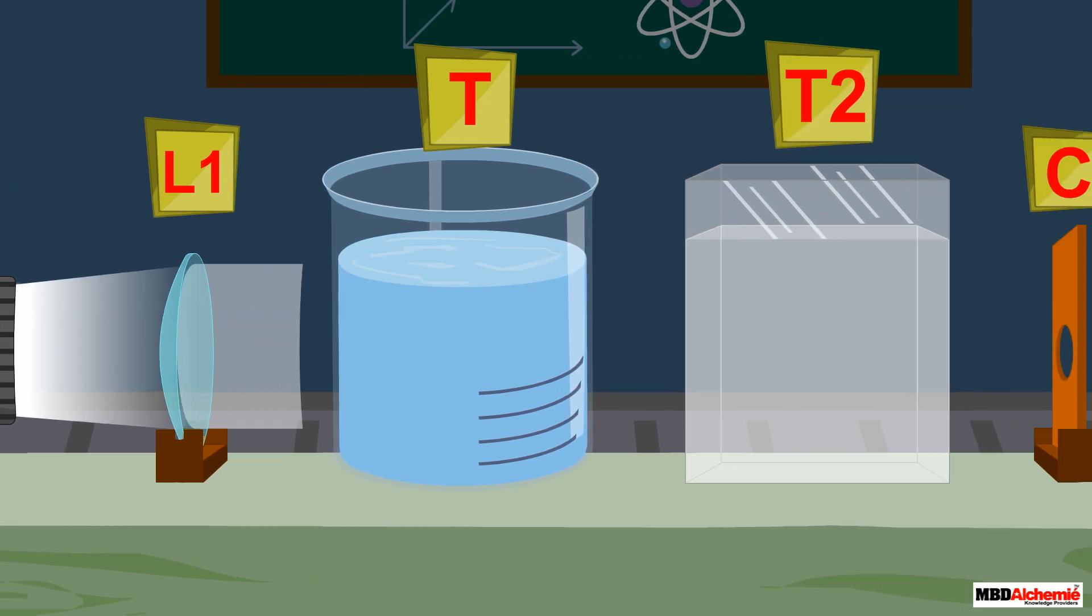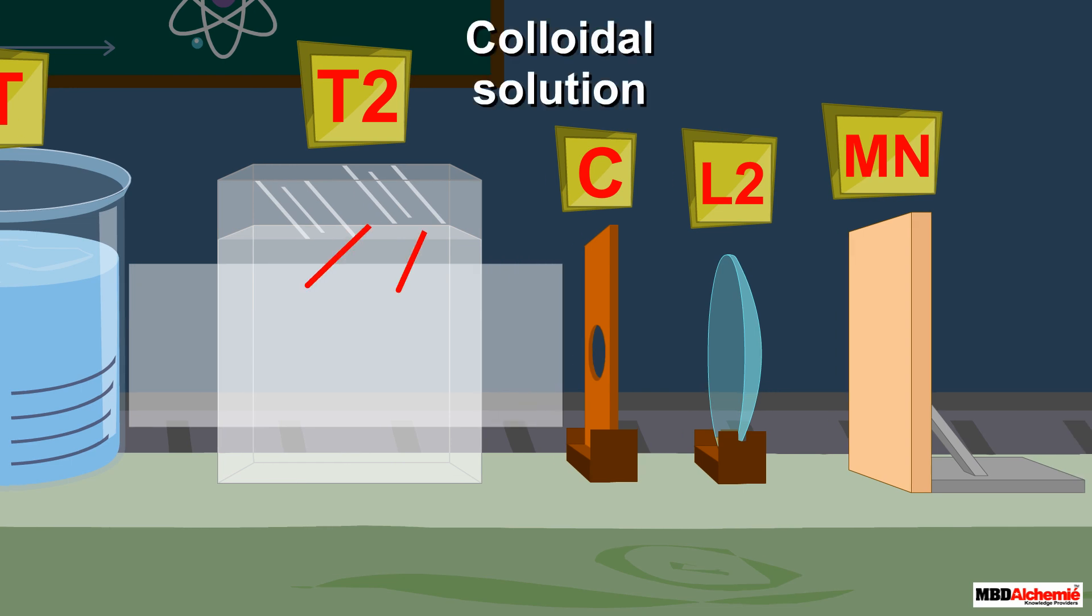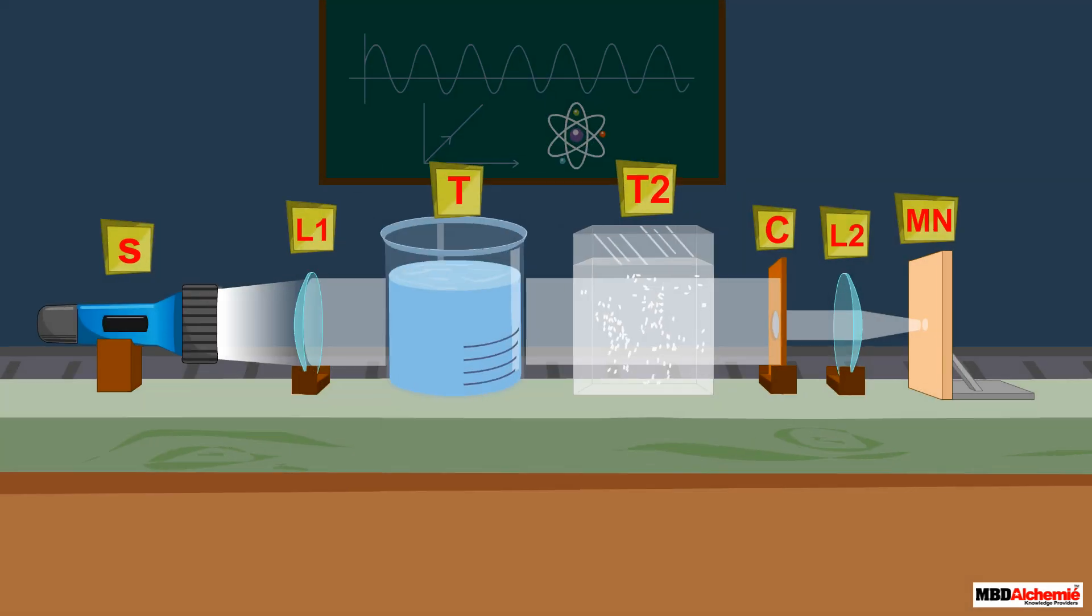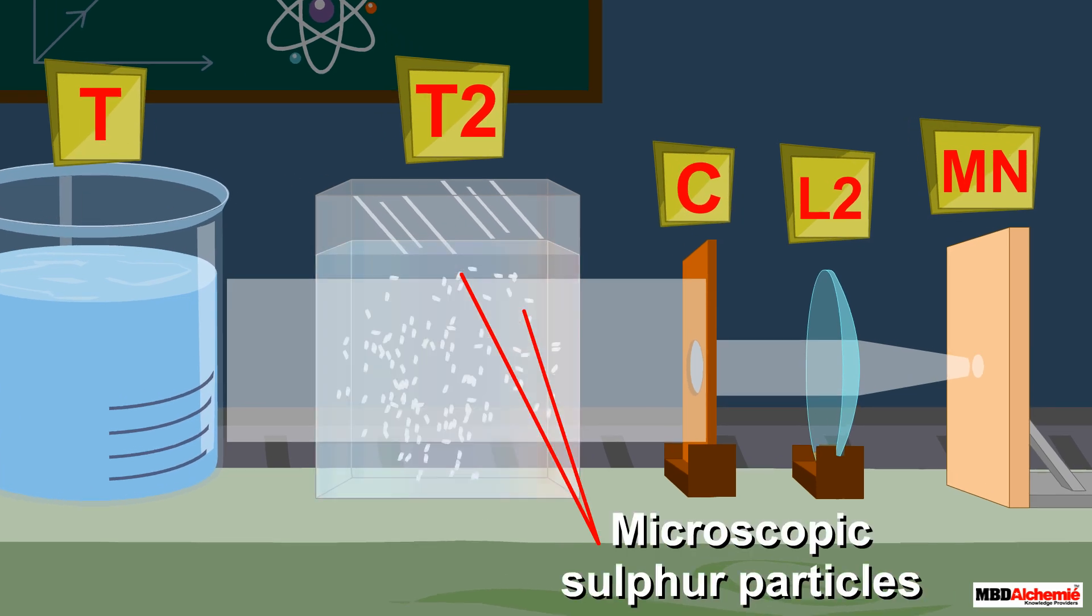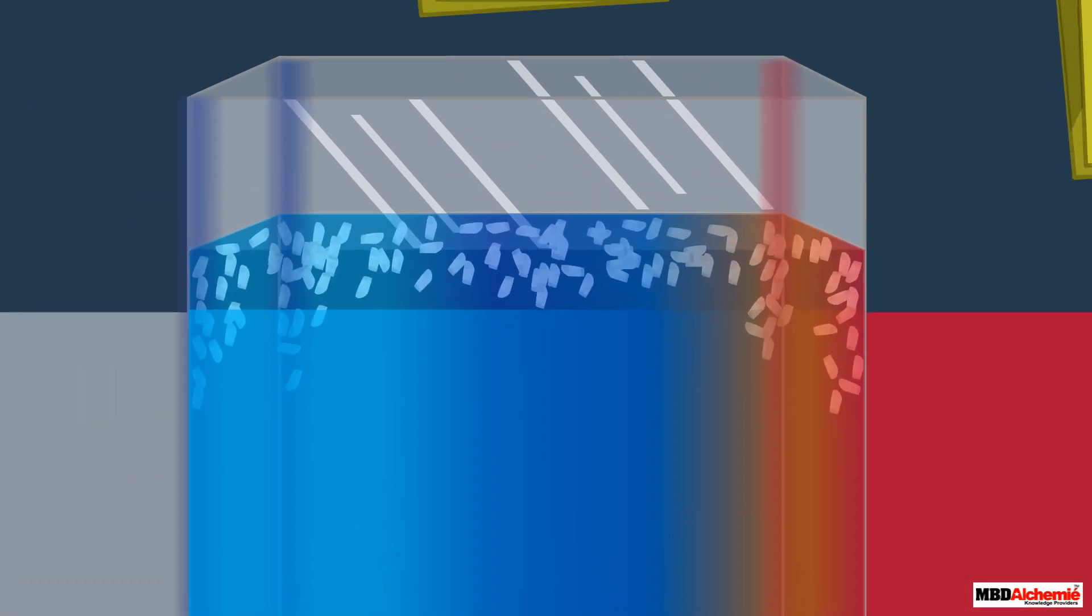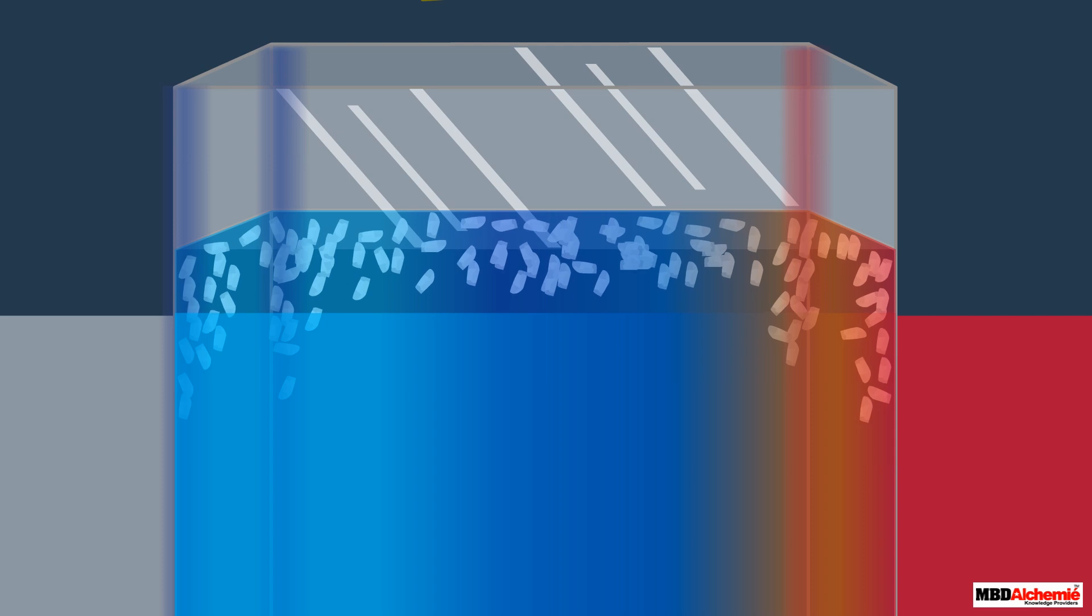The path of the light becomes visible through this colloidal solution. In about 2 to 3 minutes, you will find microscopic sulfur particles precipitating. As the sulfur particles begin to form, you can observe blue light from the three sides of the glass tank.